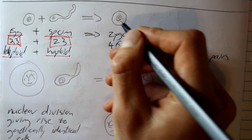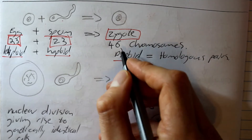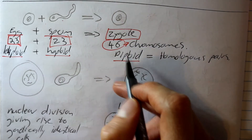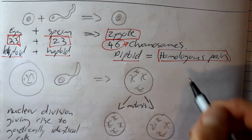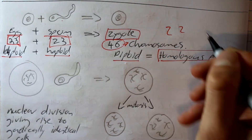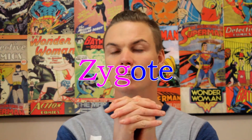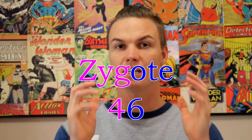When our egg and sperm meet, they produce what's known as a zygote. This zygote is diploid, meaning it has a full set of chromosomes — which is 46 chromosomes. Diploid cells have homologous pairs of chromosomes, meaning there are two copies of each chromosome. When these two copies come together, the chromosomes look like an X. The sperm and egg each have 23 chromosomes, and when they come together it makes 46.